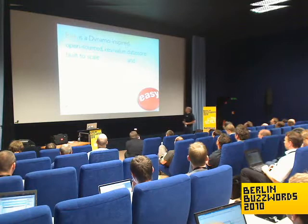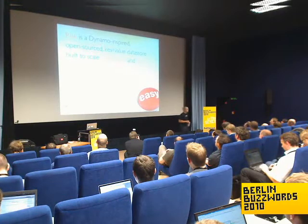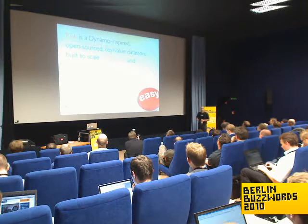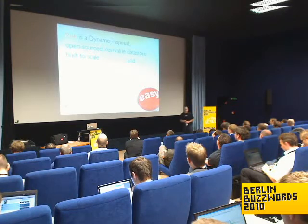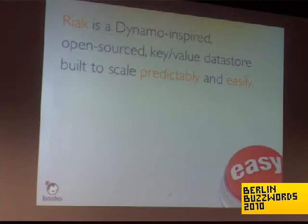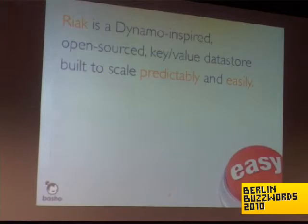Riak is a Dynamo-inspired, open-sourced key-value data store built to scale predictably and easily. When the Basho team first set out to build the sales application they were writing, they looked around for a data store that had the scaling model they wanted — able to stand up a node, run a couple of commands, and have that new machine automatically start taking over some of the existing data and distributing load. At the time there was nothing on the market that could do that, so the team started building Riak as a scratch-your-own-itch product.